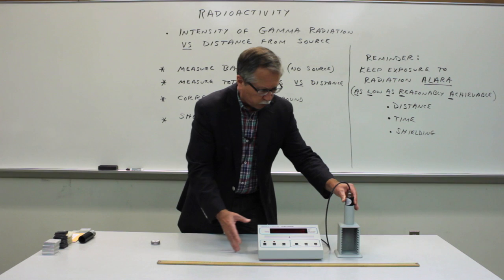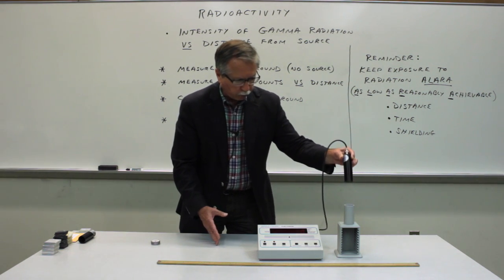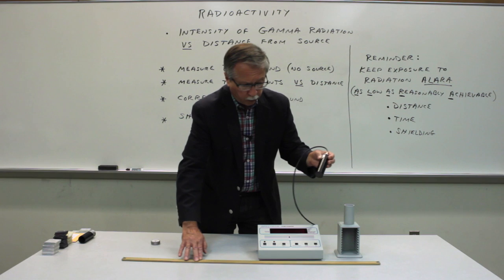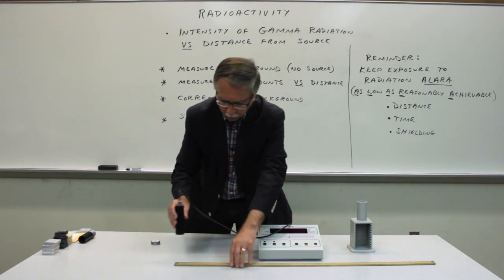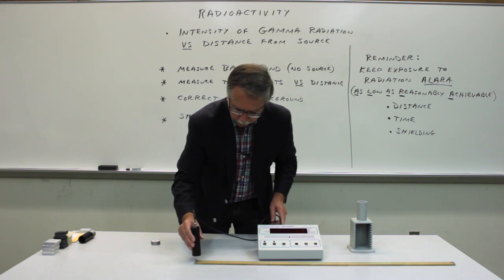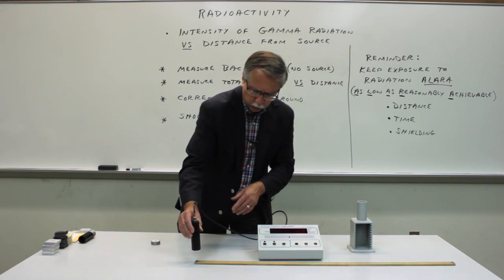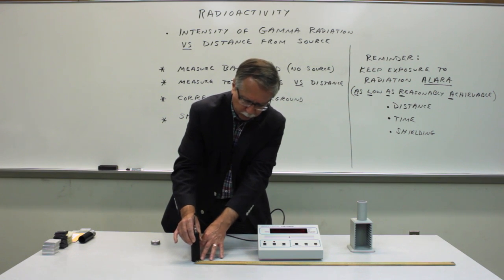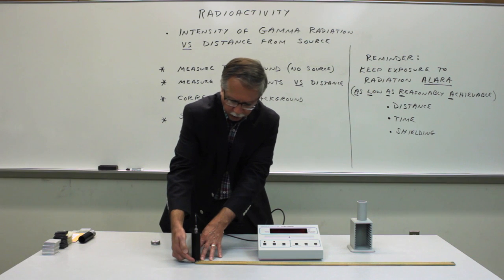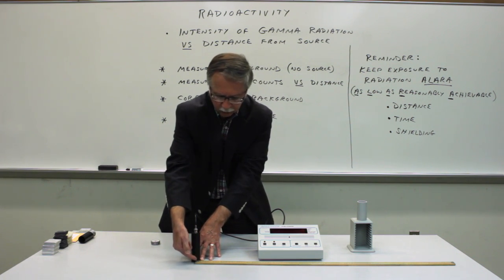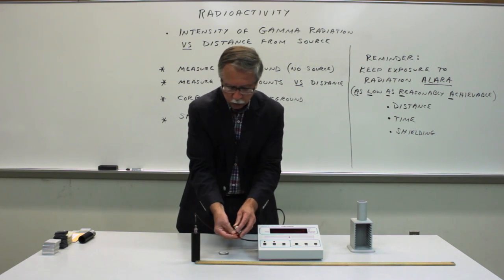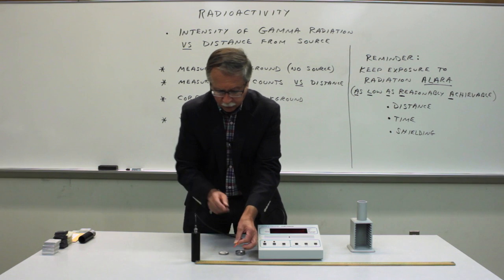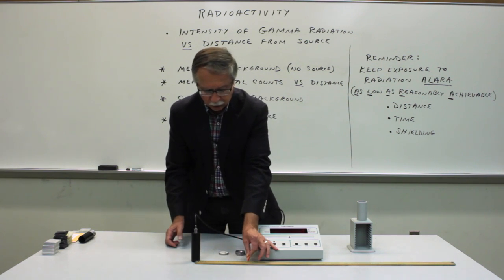Then carefully remove the tube from its stand and place the tube at the end of a meter stick. You can do this in one of two ways — either set the tube carefully face down on its window, with the edge of the meter stick right at the middle of the tube, and then place the radioactive source at various distances along the meter stick.